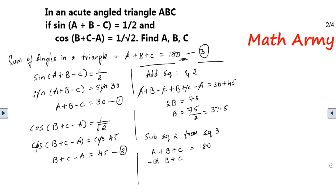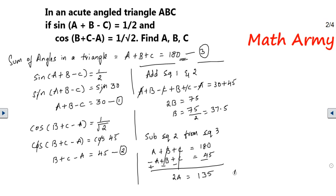Subtracting equation 2 — changing the signs: -A becomes +A, -B, -C, and -45°. Here +B and -B cancel, +C and -C cancel, and you are left with 2A = 180 - 45 = 135°. Therefore A = 135/2 = 67.5°.